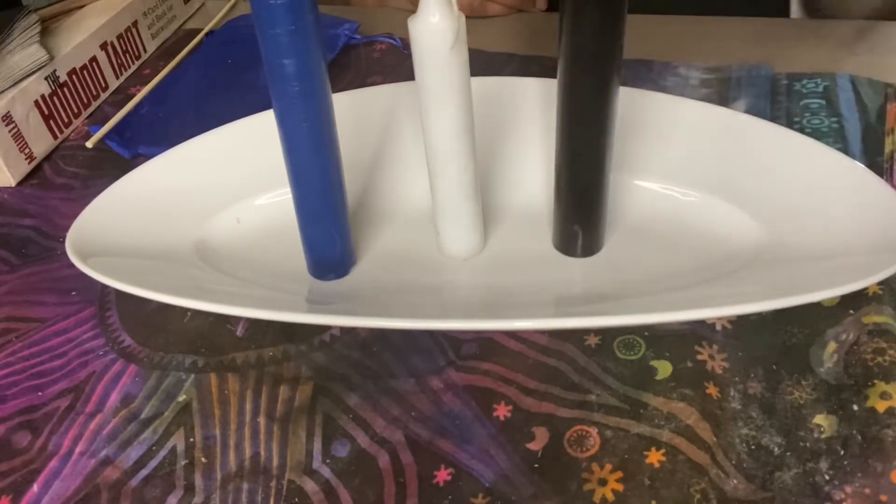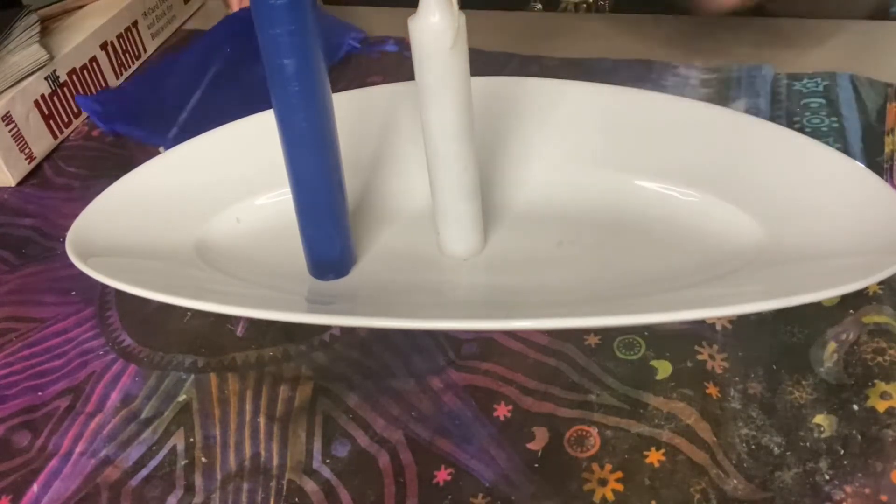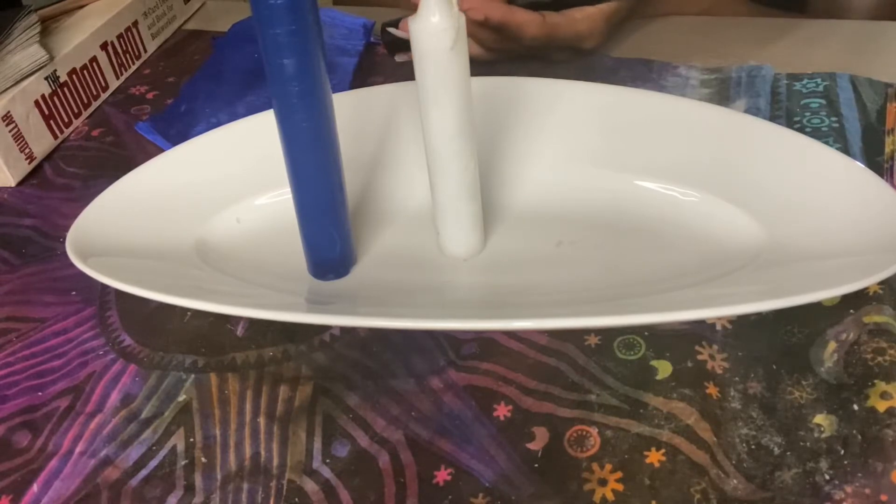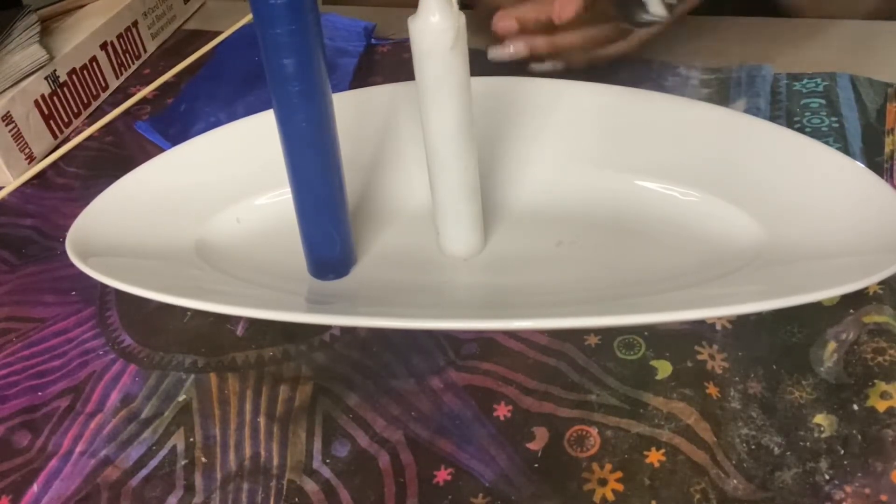Then we have our black candle. Our black candle is for protection because this is a protect my peace spell. So we're going to write on there protection. And you can write your name. So I'm writing protection on there. And we're going to do the same thing. Rub our oil clockwise.